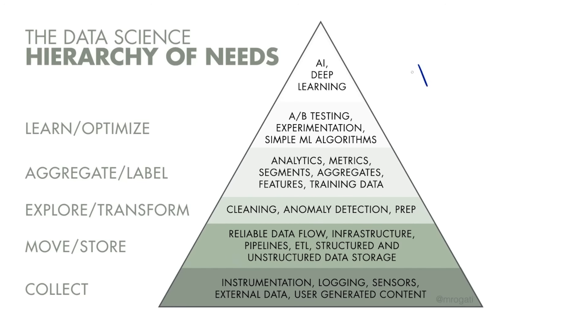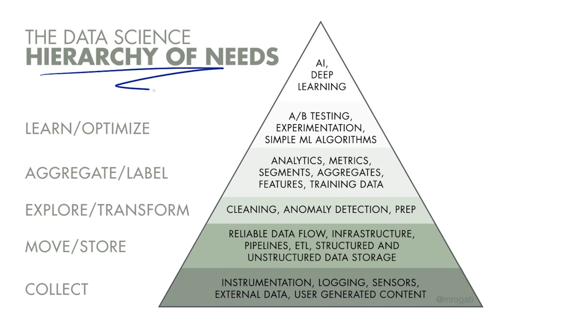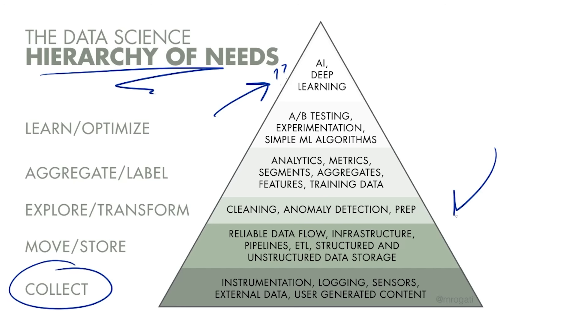I'm going to make things a bit more clear today by explaining the differences using this illustration by Monica Rogatti. Before I talk about the different job positions, let's talk about what we actually use data for. What this hierarchy of needs illustration is saying is that if you can't even collect data properly, then there's no point in working on AI or deep learning. AI won't magically solve everything, and your business probably doesn't need AI to improve itself.